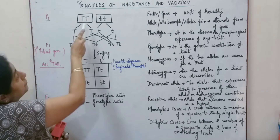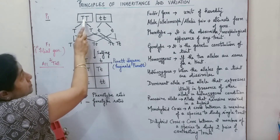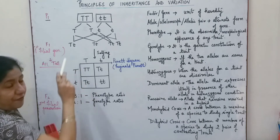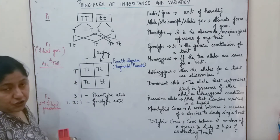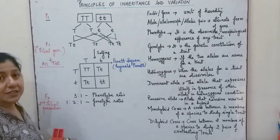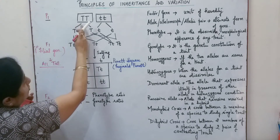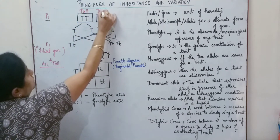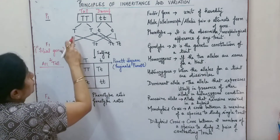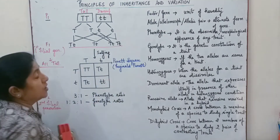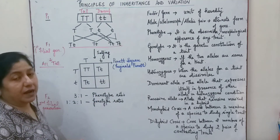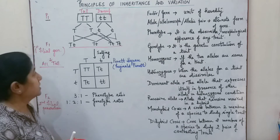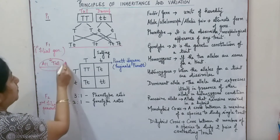The first cross involved a cross between the purebred tall and the purebred dwarf — one pair of contrasting traits that Mendel considered. He expected that the F1 first filial generation would show blending, meaning plants would be medium-heighted. But the result he obtained was completely different: the first generation produced all tall plants.